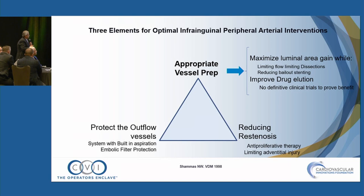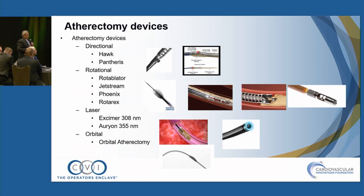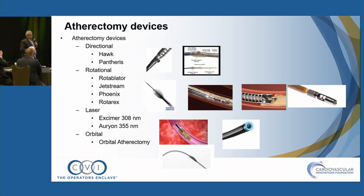We have nine atherectomy devices approved in the U.S.: directional — the Hawk and Pantheris; rotational — the Rotablator, Jetstream, Phoenix, and Rotarex; laser — the Excimer and Orion; and orbital atherectomy, which has a somewhat different mode of action. These devices are not created equal and you need to know the differences between them.